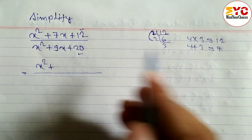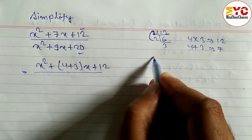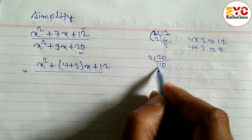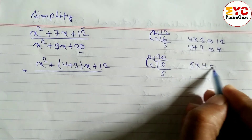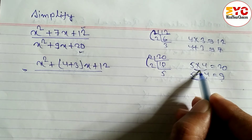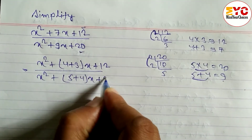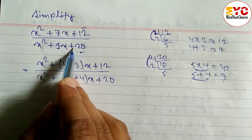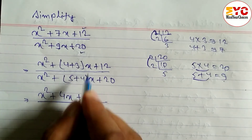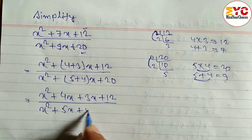So we write x² plus, in the place of 7 we write 4 and 3: x² + 4x + 3x + 12. Similarly in the denominator, while multiplying 20 and adding 9: 2×10=20, 2+10=12 — not 9. Try 5×4=20, and 5+4=9. So we write x² + 5x + 4x + 20.